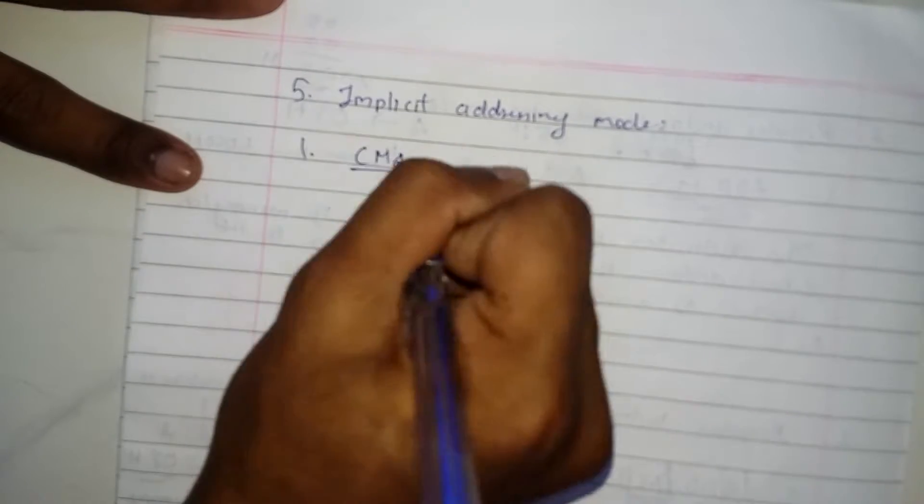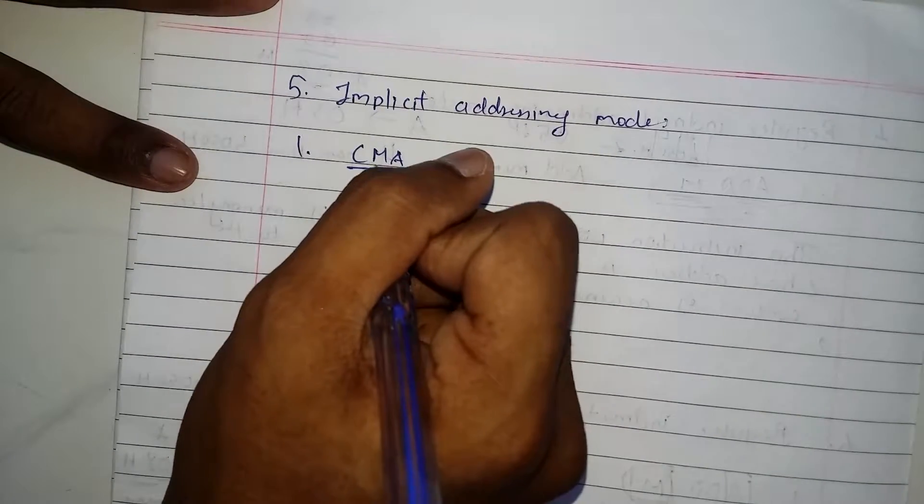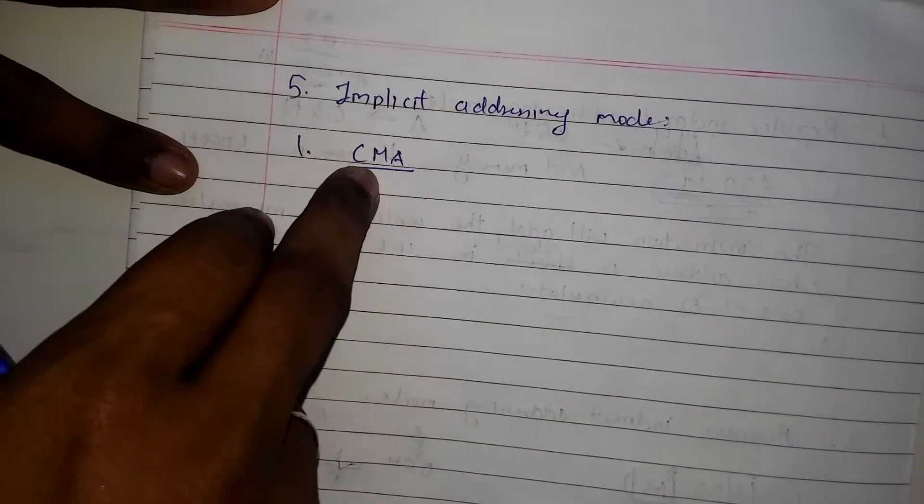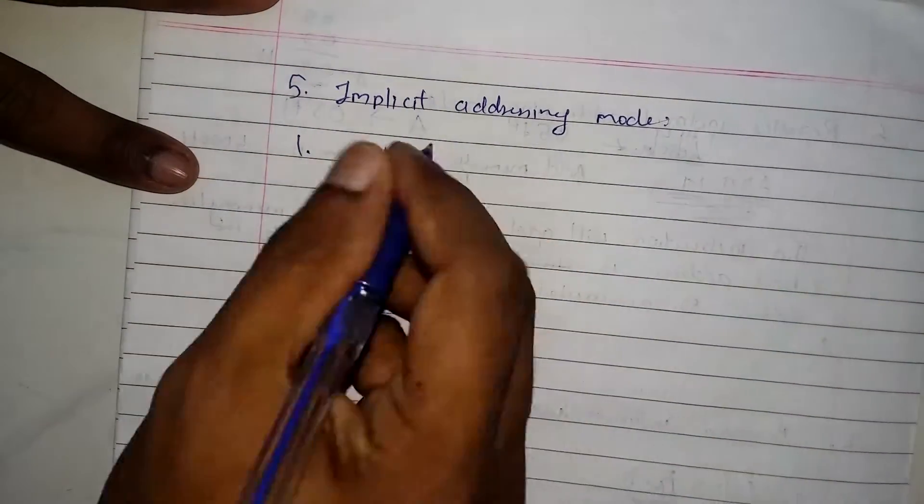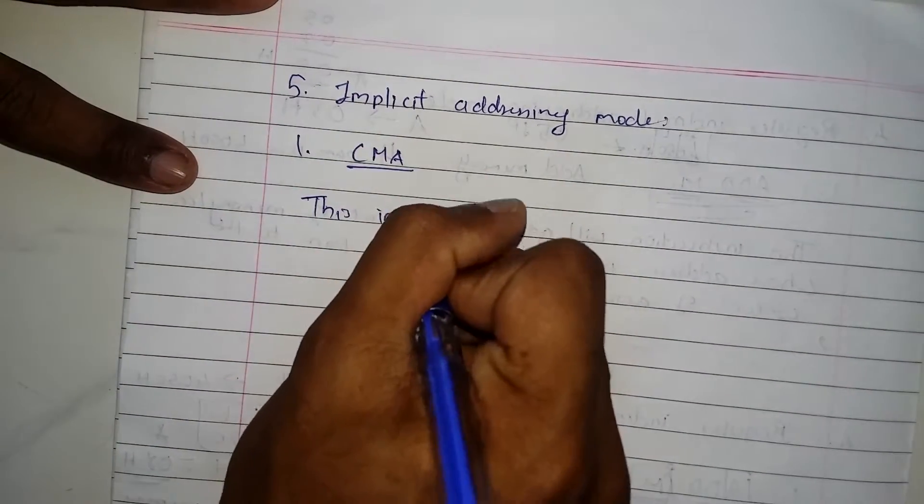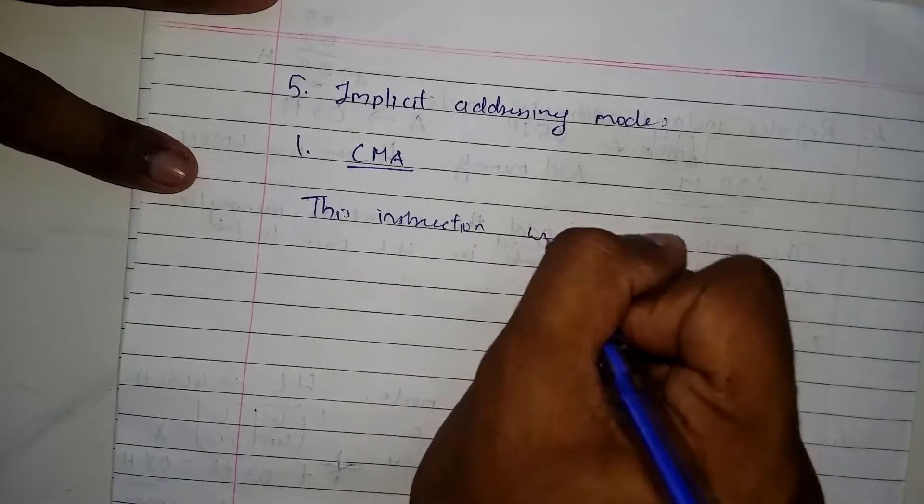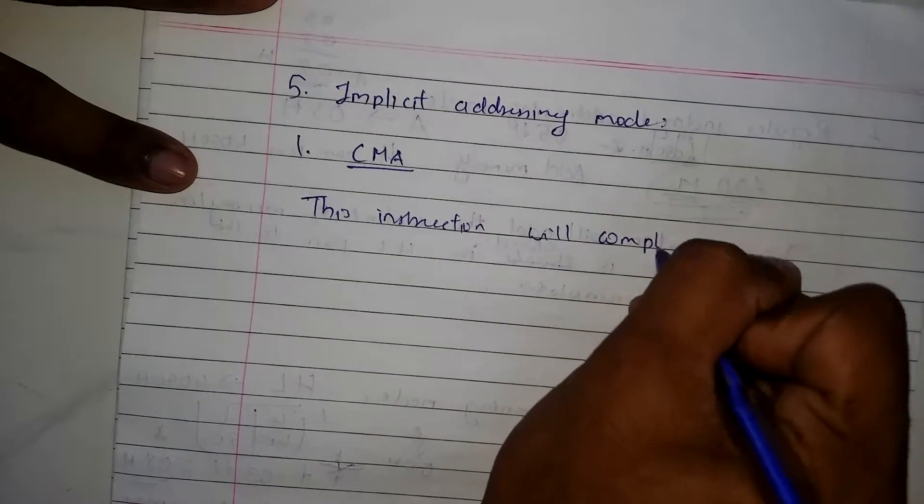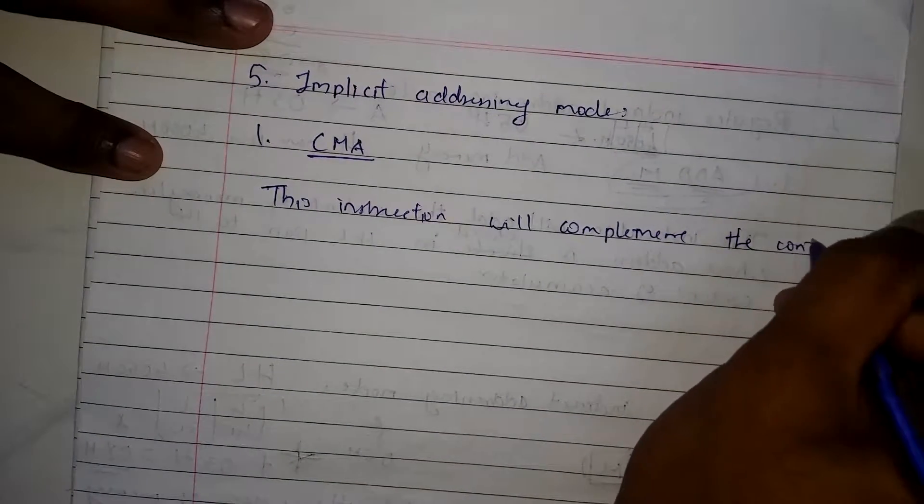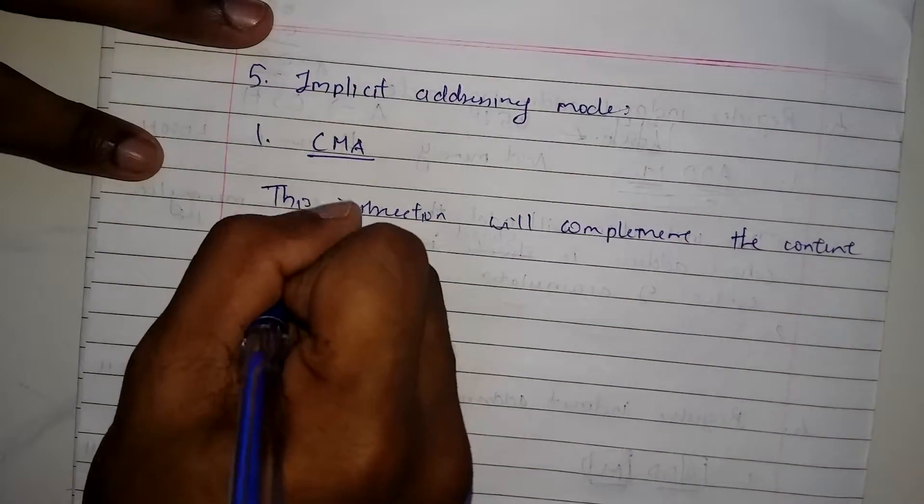First I'm going to write an example so it is easy for you guys to understand. What this example does is it complements the content of the accumulator. Now let me write this and you guys can make notes.